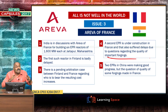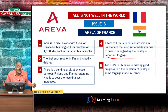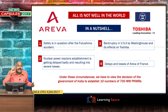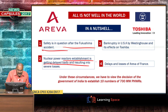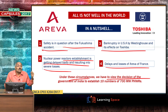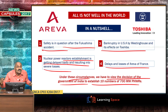With Westinghouse in bankruptcy, the future of the planned 6 reactors at Kovada in Srikakulam district of Andhra Pradesh is uncertain. Areva is also not in good stead. Under these circumstances, the government's decision to go for indigenously developed heavy water reactors — 10 numbers of 700 megawatt pressurized heavy water reactors totalling 7,000 megawatt — appears to be the most important and wise decision.